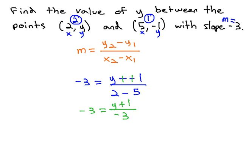We can clear out the unwanted denominator by multiplying by the LCD of -3 on both sides.